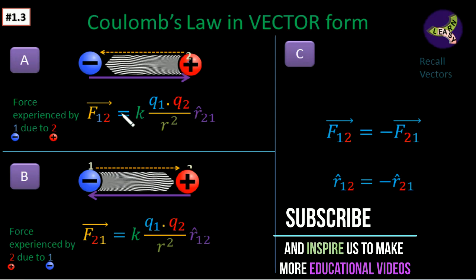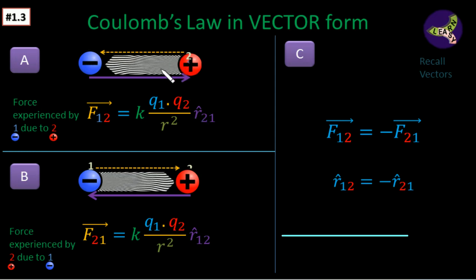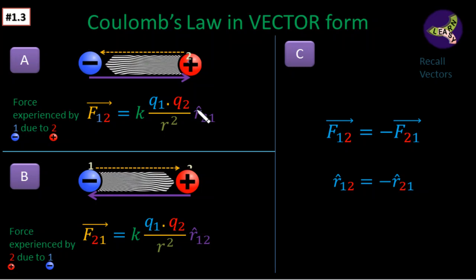F12 is nothing but the force experienced by the first charge due to 2. So it is the force experienced by 1 due to 2, and that is equal to K Q1 Q2 by R square. We have a unit vector from 2 to 1, and we have to give this unit vector so that this part will become a vector.